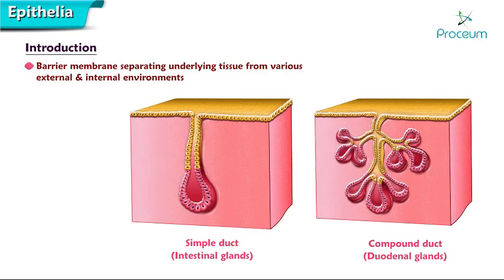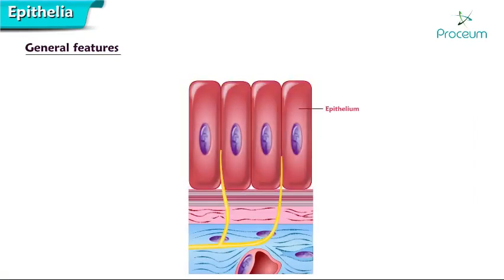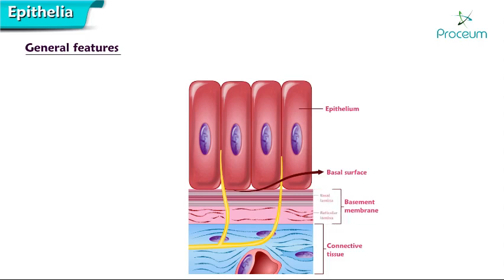General features of epithelium: the cellular sheet is made of either a single layer or many layers of cells. The deep or basal surface of the epithelium rests on a basement membrane, which separates it from the vascular connective tissue. The basement membrane is made of a basal lamina — an amorphous substance that is a product of the epithelium — and a reticular lamina made of reticular fibers, which is a product of the connective tissue.